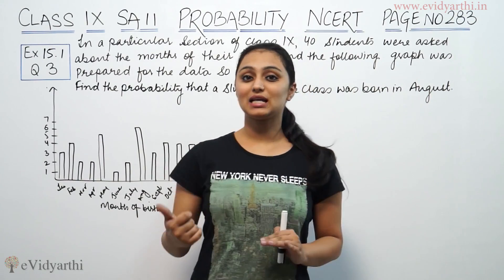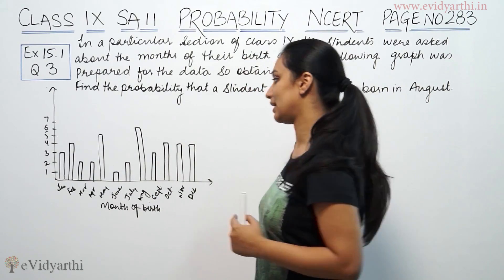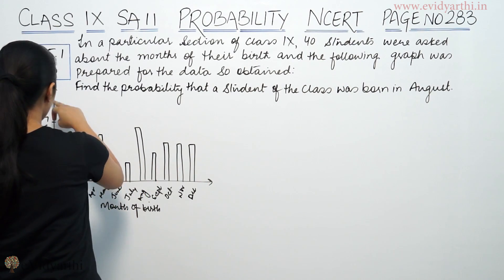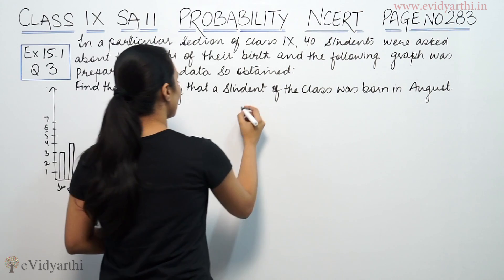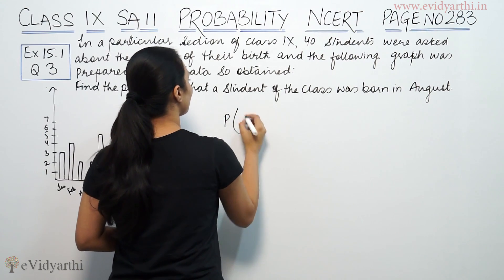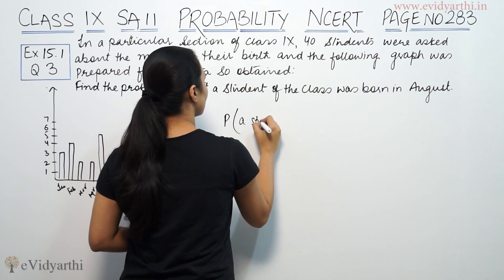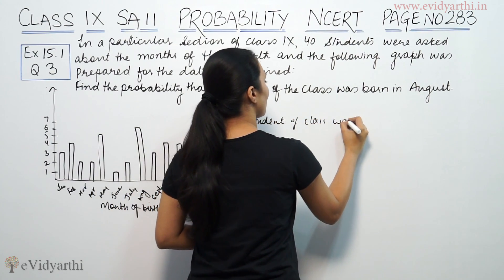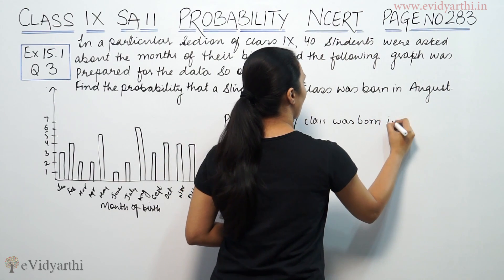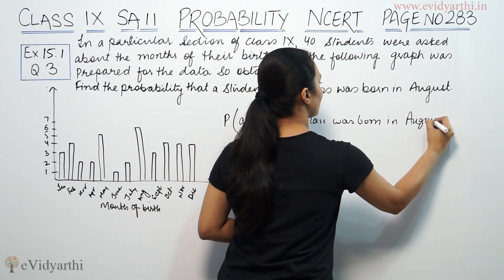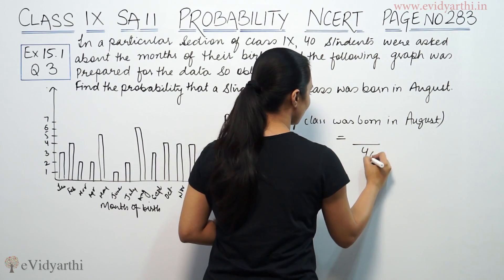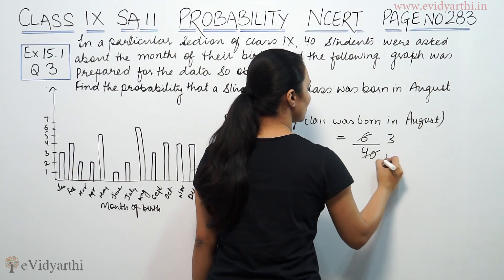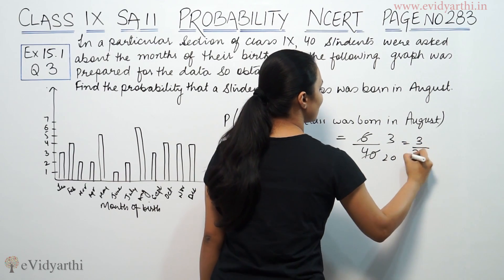So, we have to find the probability that a student of the class was born in August. From the graph, the number of students born in August is 6. So the probability that a student of the class was born in August is 6 over 40, which simplifies — 6 divided by 2 is 3, and 40 divided by 2 is 20 — so the answer is 3 by 20.